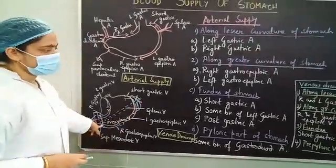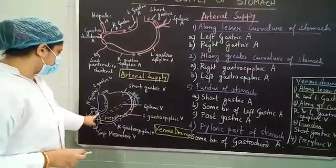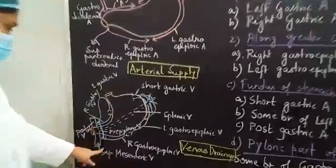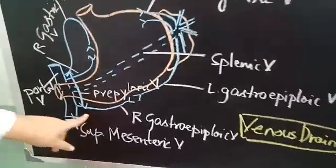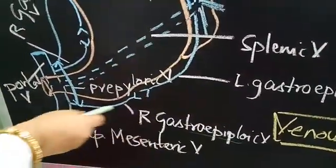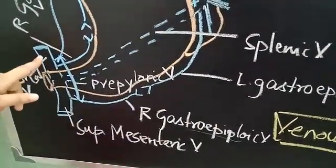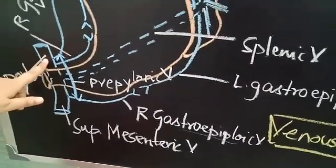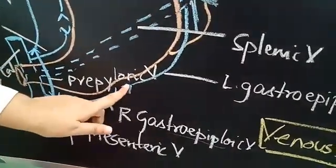And fourthly, you will find another important vein known as the pre-pyloric vein. This pre-pyloric vein connects the right gastroepiploic vein with the right gastric vein or with the portal vein.